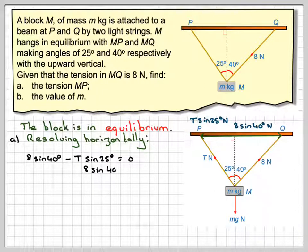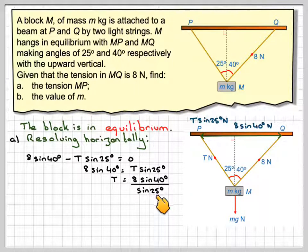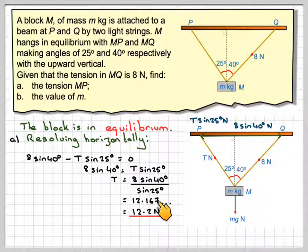Rearranging that, we're going to have that 8 sine 40 equals T sine 25. And therefore T will be 8 sine 40 over sine 25, which we do in our calculator. Make sure our calculator is in degree mode.